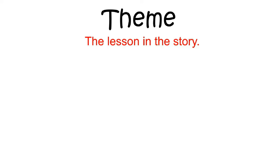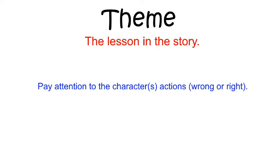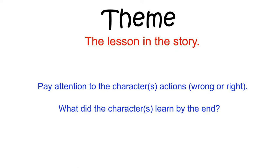When writing stories, authors occasionally attempt to teach a lesson about life. This lesson is called a theme. A writer will not typically come right out and tell you what the theme of the story is. Instead, you will have to think about what the story's characters did that was wrong or right, and what those characters learned about life by the end of the story.